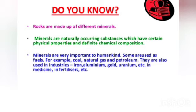Rocks are made up of different minerals. Minerals are naturally occurring substances which have certain physical properties and definite chemical composition. Minerals are very important to humankind. Some are used as fuels — for example, coal, natural gas, and petroleum. They are also used in industries — iron, aluminium, gold, uranium, etc. — and in medicine and in fertilizers.